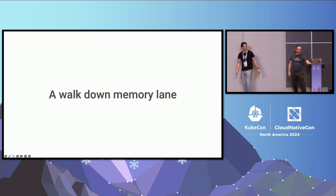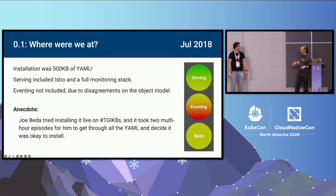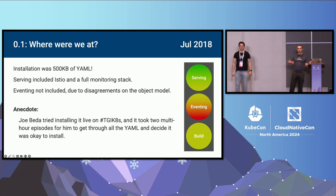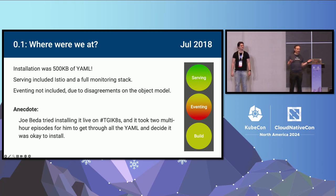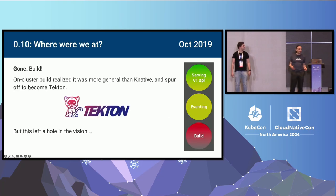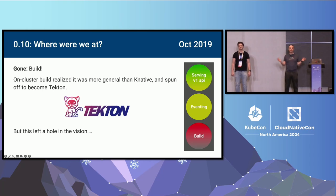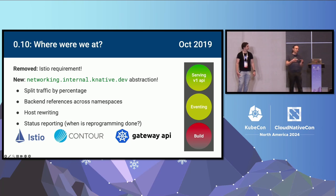Winding all the way back to 0.1: we didn't actually manage to package eventing. Serving installation was about 500K of YAML — it took Joe Beta two TGIK episodes of two hours each to decide he'd seen enough YAML and was just going to try installing it. Build was kind of there. Moving to the next year, build is gone — it grew up and realized it could build things beyond containers for serverless, graduated to become Tekton, which was great for them but meant a blank spot in our build story for several slides.